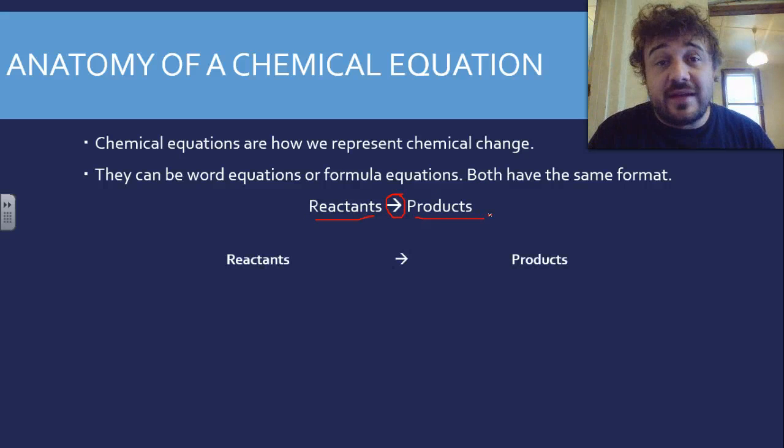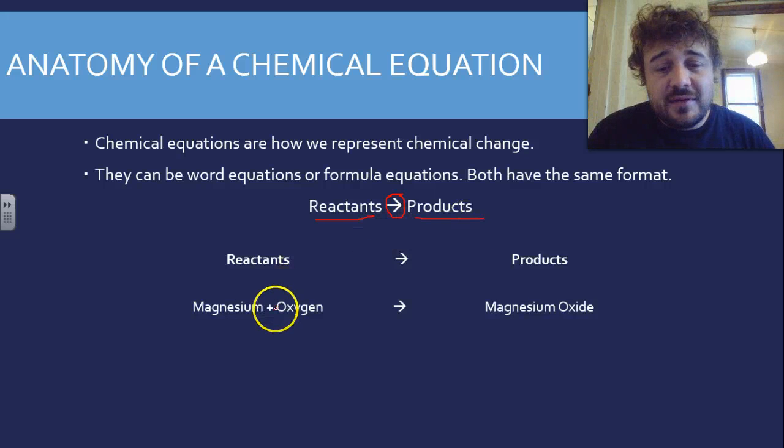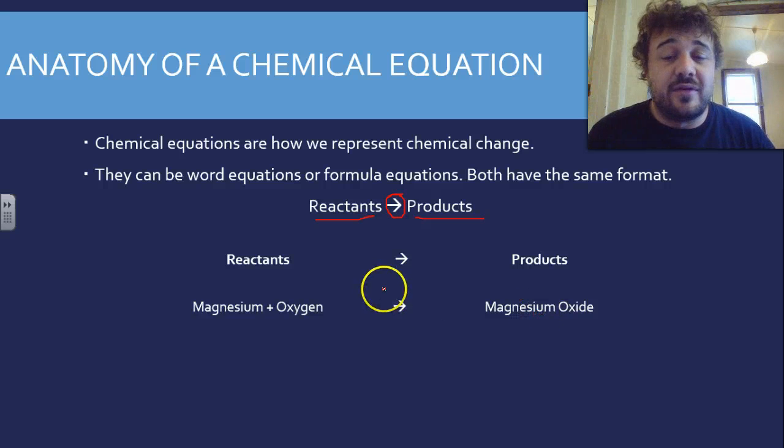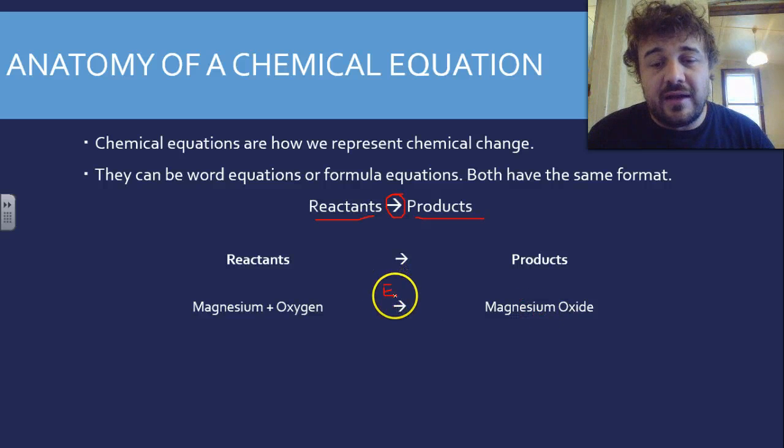Let's have a look at one: reactants to products. Magnesium plus oxygen, put them together usually with fire - we could actually write 'energy' up here.